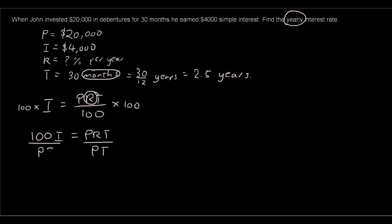And then we want to divide by P and T on both sides. Because R is the variable that we want to remain on the right hand side. So P divided by P is 1, T divided by T is 1. So we're left with R equals 100I over PT.